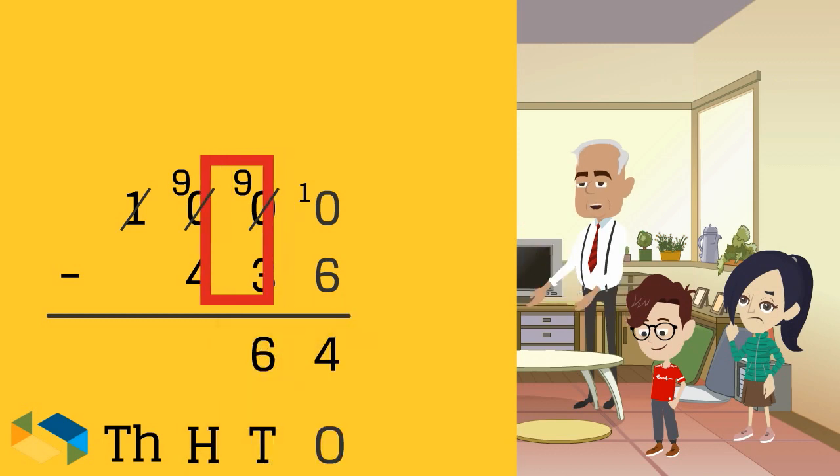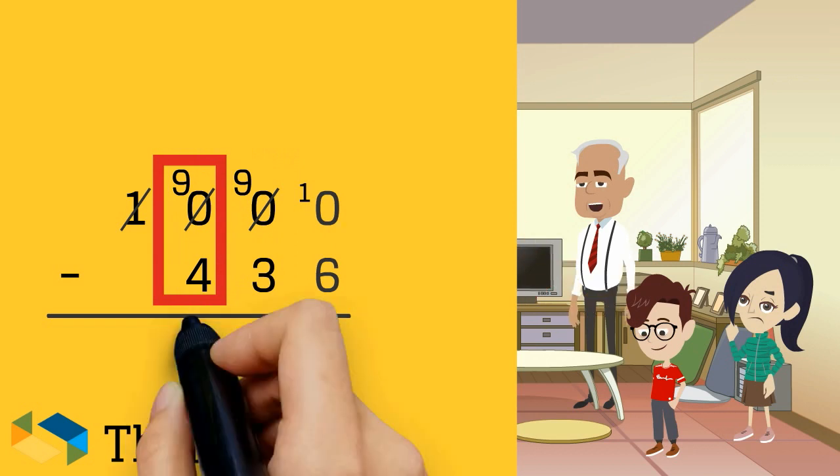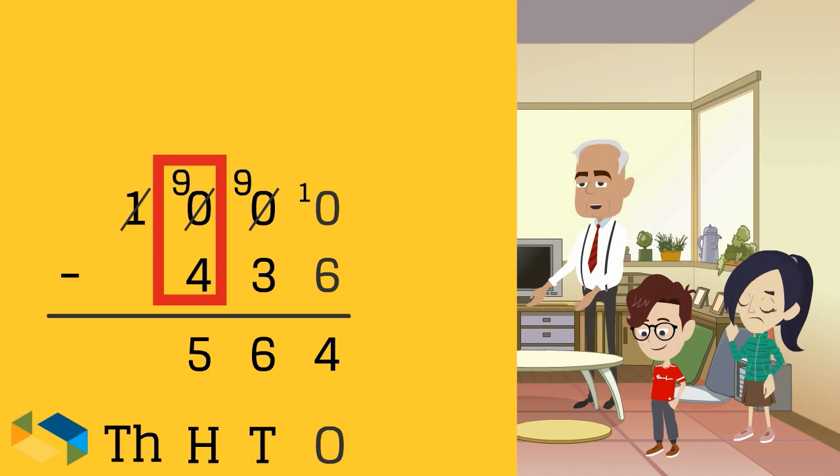And finally at the hundreds place, we have 9 minus 4 which is 5. So the answer for 1000 minus 436 is 564.